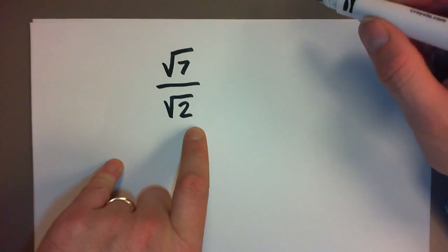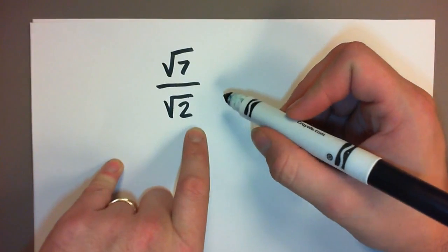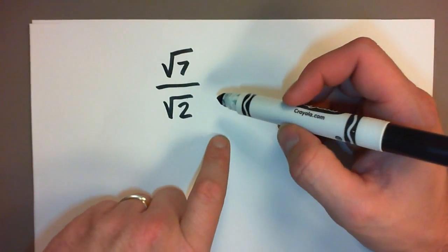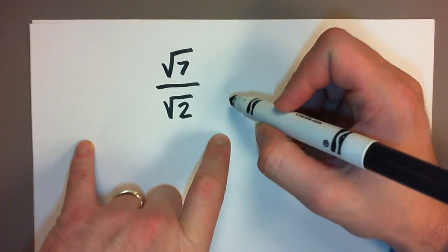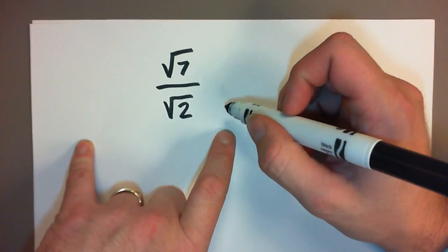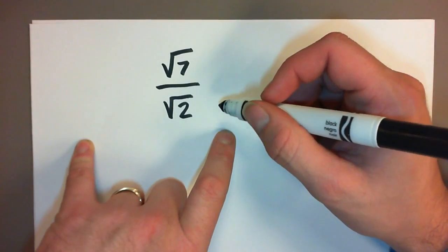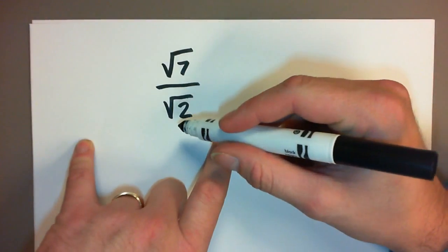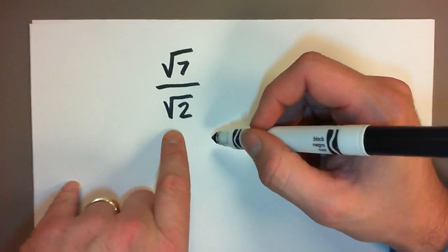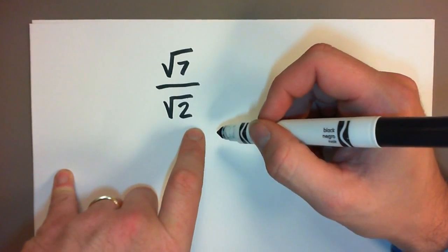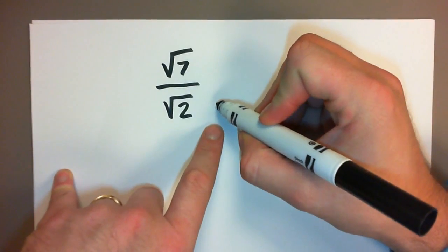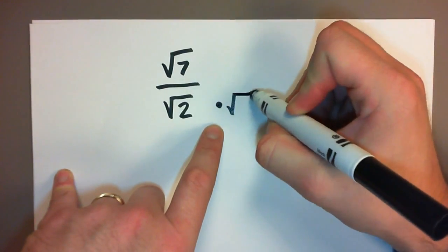Now whenever we do something to a fraction we need to make sure not to change the value of the fraction. So I can multiply the top number by 2 but I have to multiply the bottom number by 2 as well. What I want to do is multiply by something that's going to turn the square root of 2 into something that's not a square root. The answer is the square root of 2.